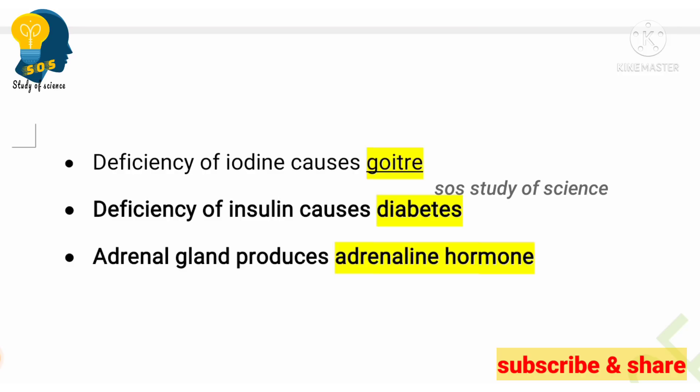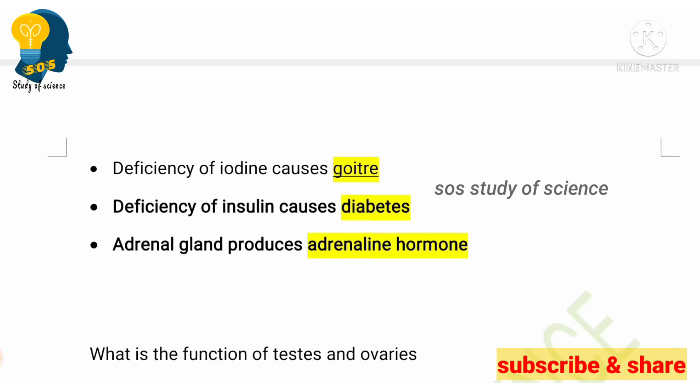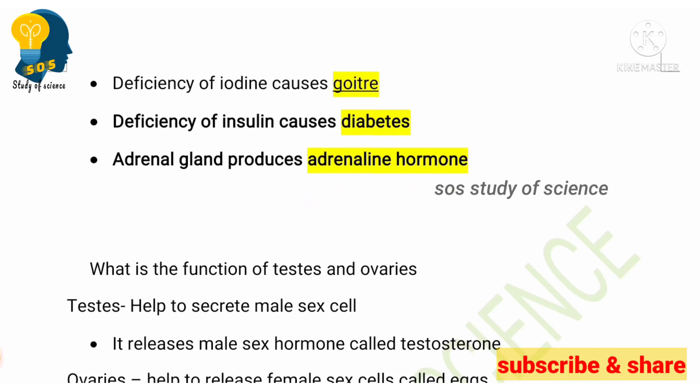Insulin is released by the pancreas — you must know this. Next, the adrenal gland produces the adrenaline hormone. Adrenaline is released when you are in an anxious or fearful state. When this happens, your body's blood pressure increases, heartbeat rate increases, and breathing rate also increases. This is a very important topic — learn it well, dear students.